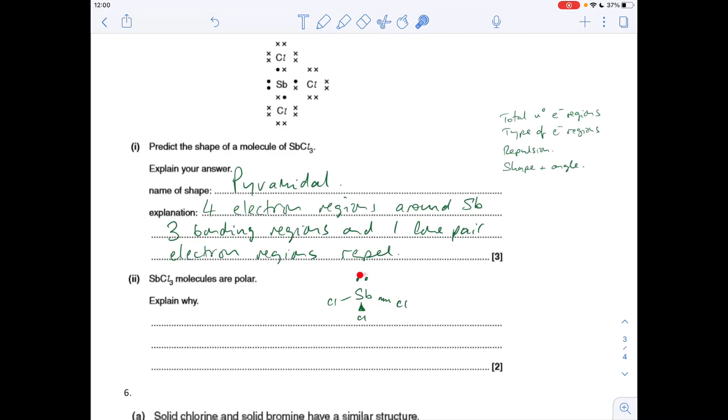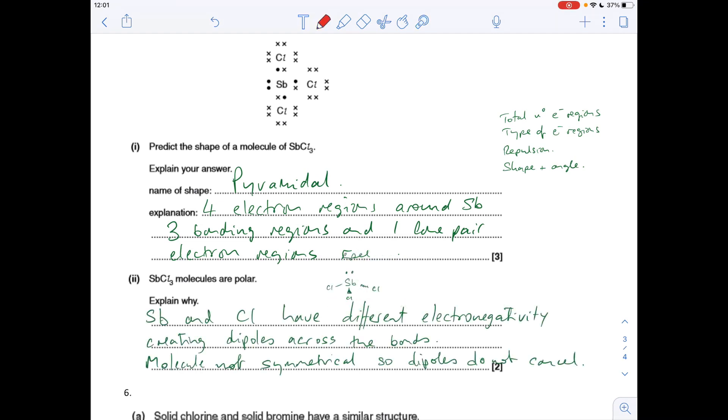For the last part of the question, you'll see I've drawn the shape diagram to help explain this. SbCl3 has a pyramidal shape. Across each of these bonds, there'll be a dipole because they've got different electronegativities. Because of the lone pair, it's knocking the symmetry out of the molecule, and that means that the dipoles can't cancel each other out. Therefore, there will be an overall dipole on the molecule, and therefore it's polar. In terms of marks, we just need to say about the different electronegativity values causing the dipoles in the bonds, and they don't cancel because of the lack of symmetry.